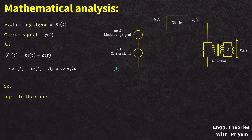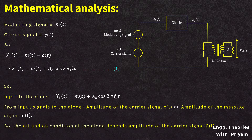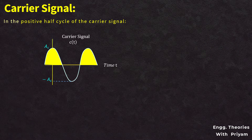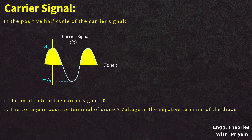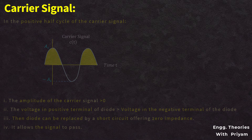From the input signals to the diode, the amplitude of the carrier signal Ac is greater than the amplitude M0 of the message signal m(t), so the on/off condition of the diode depends on the amplitude of the carrier signal. The carrier signal is a cosine signal that oscillates between positive and negative maximum. In the positive half cycle of the carrier signal, the amplitude is greater than zero, so the voltage at the positive terminal of the diode is greater than at the negative terminal — the diode is forward biased and can be replaced by a short circuit offering zero impedance, and it will allow the signal to pass.